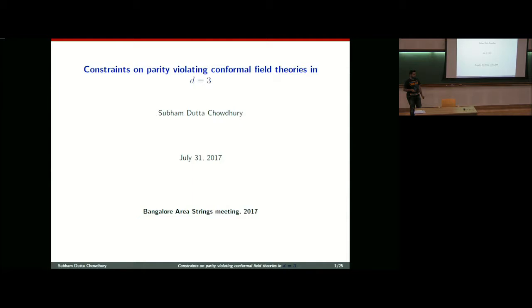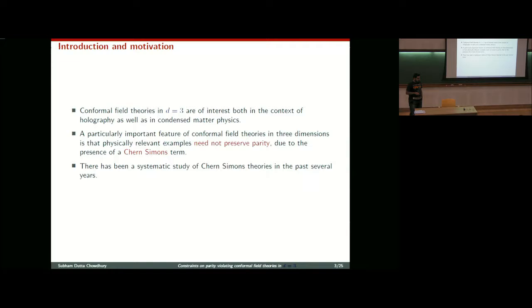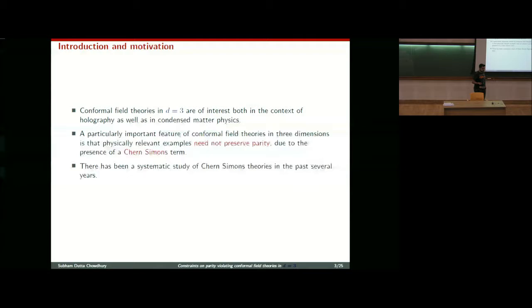I would like to begin by thanking the organizers for giving the opportunity to present my work here. Today I'll be talking about constraints on parity-violating conformal field theories in D equals 3. This is based on recent work with Justin and Shiroman. Let me begin by first motivating the problem. Conformal field theories in D equals 3 are of interest from holographic as well as condensed matter perspectives.